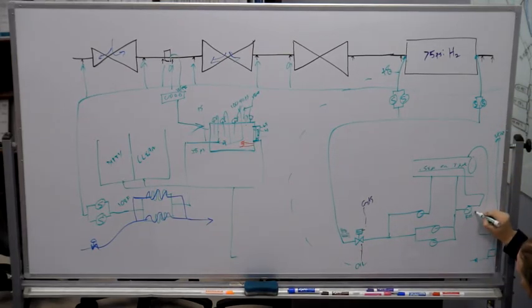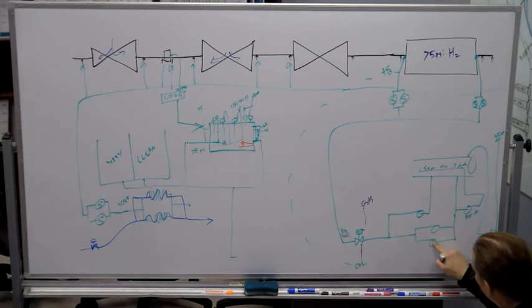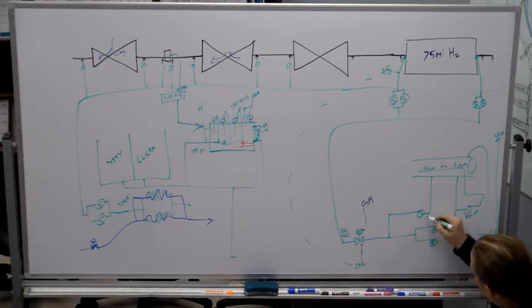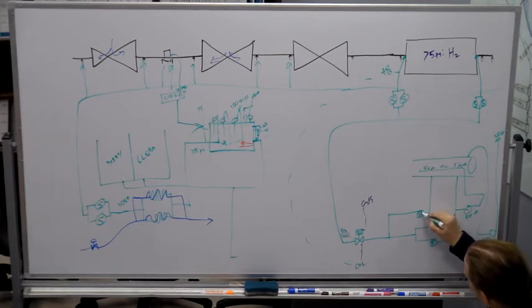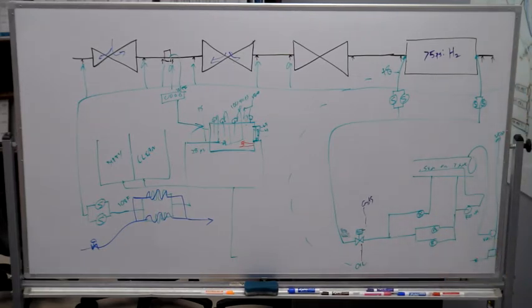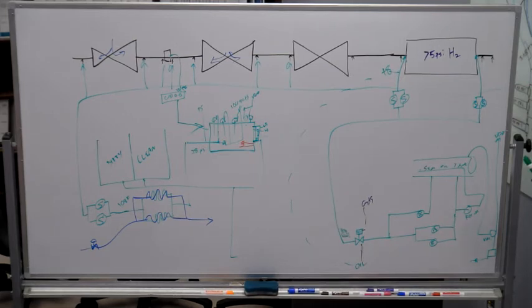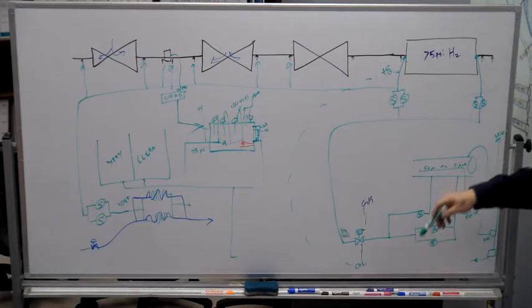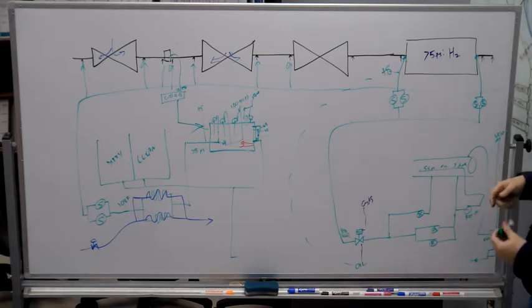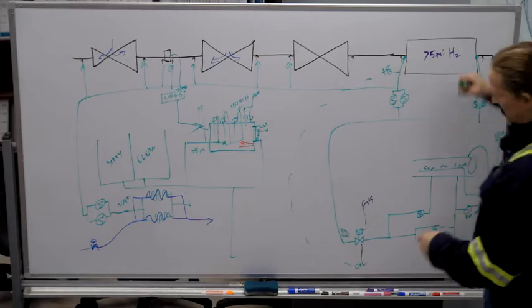So recirc and vacuum, A and B, and emergency. All right. So that is supplying the oil, but then there's a question of what happens to it, right? We got to get it back because these things are typically a loop.